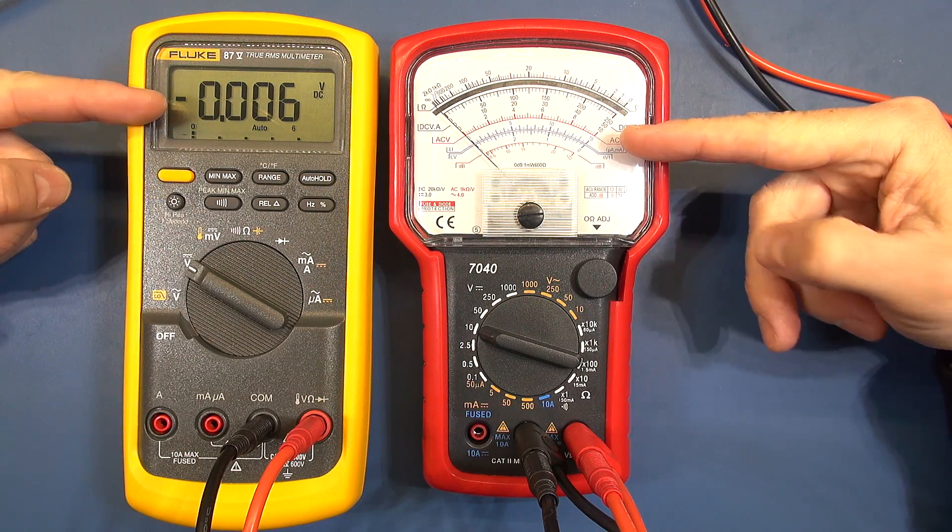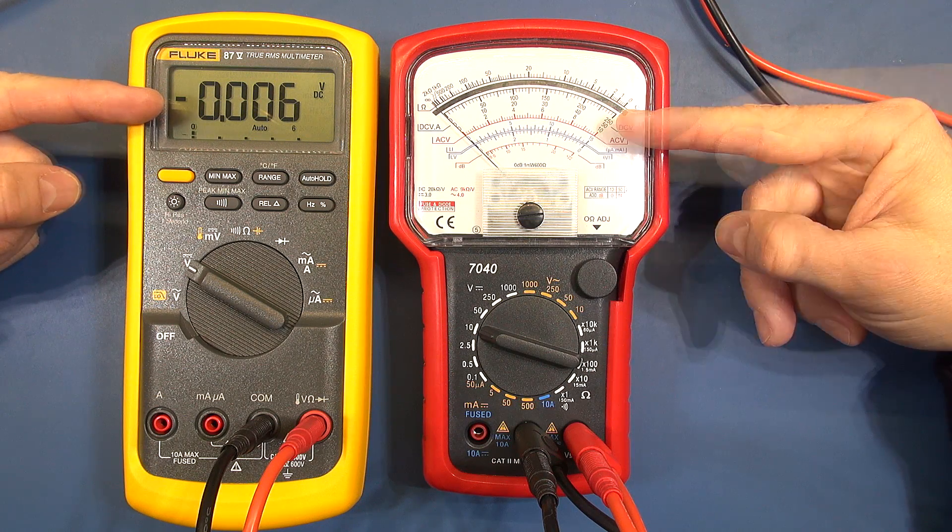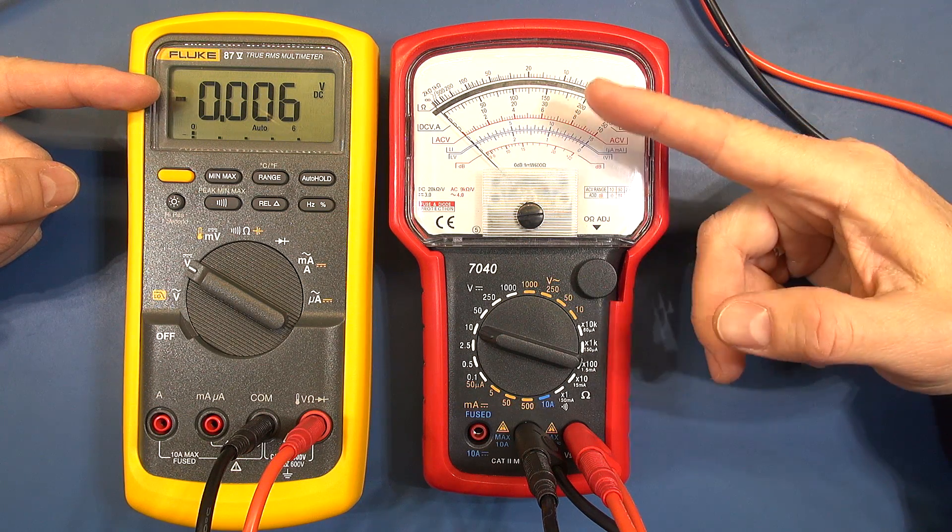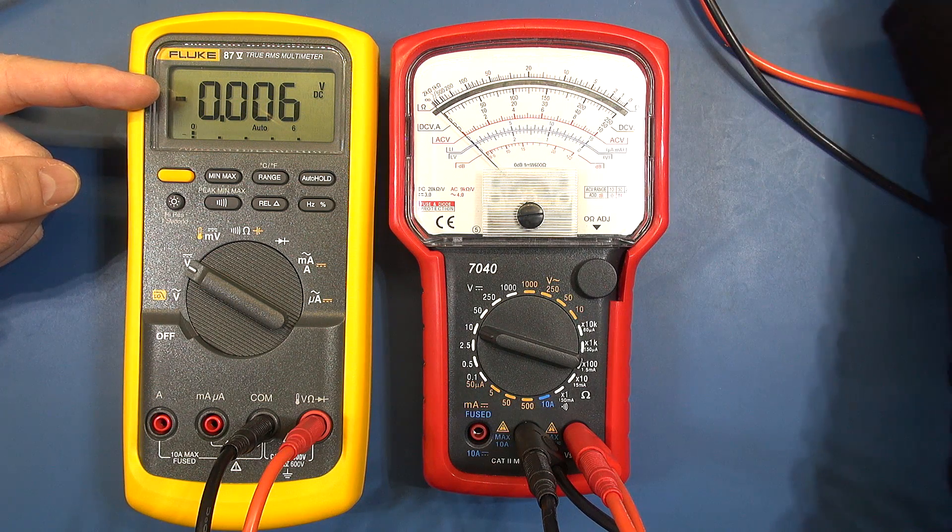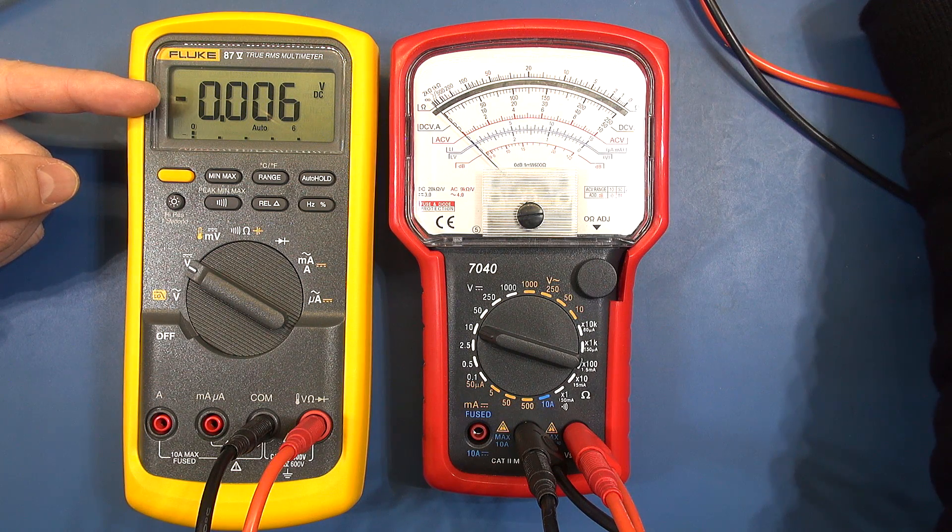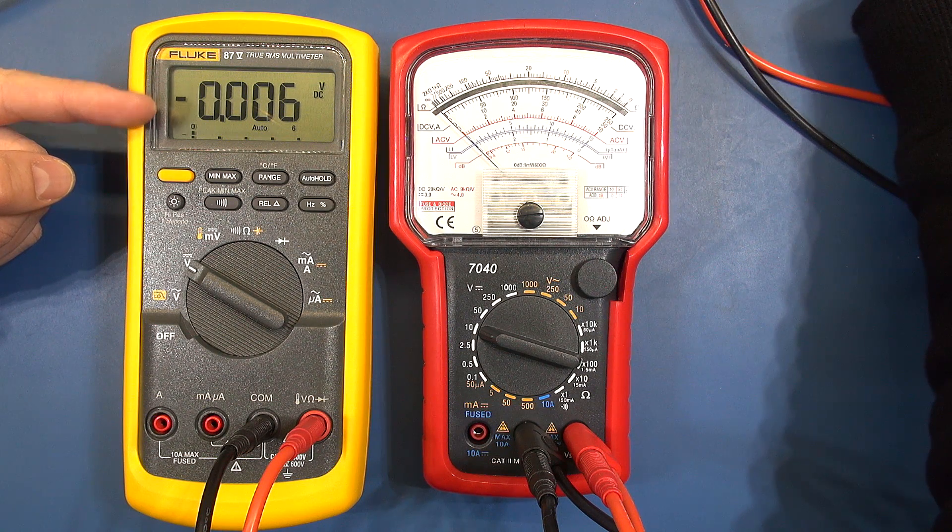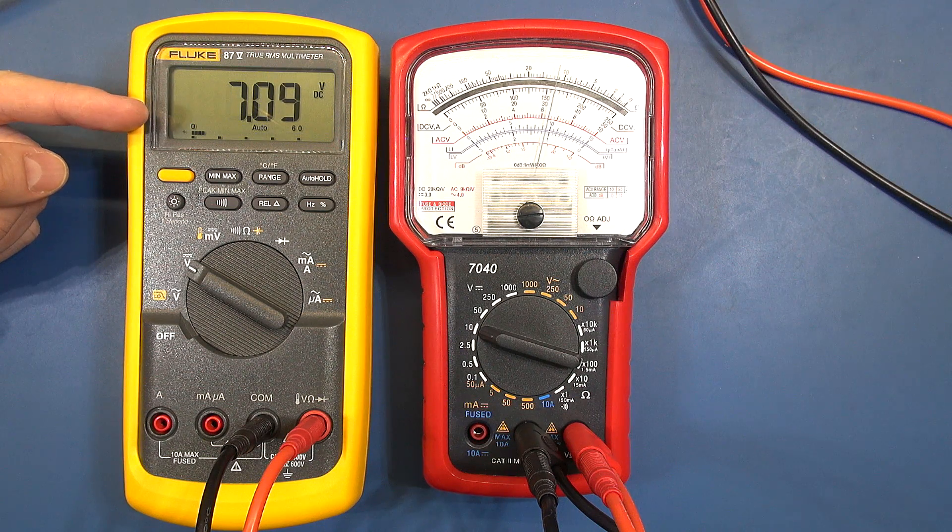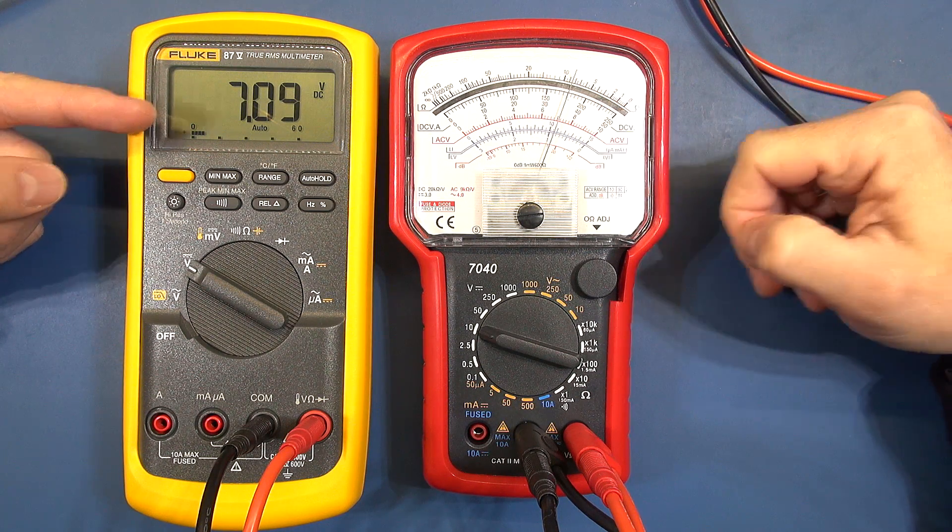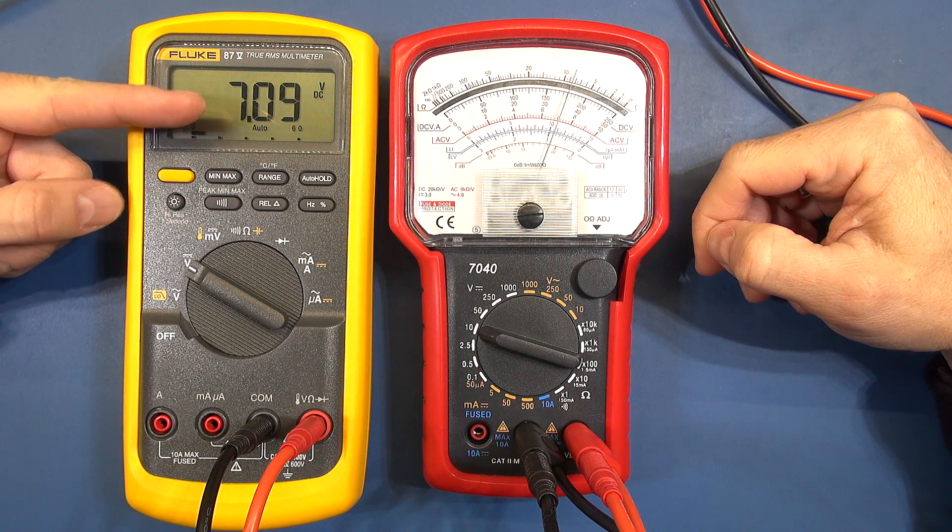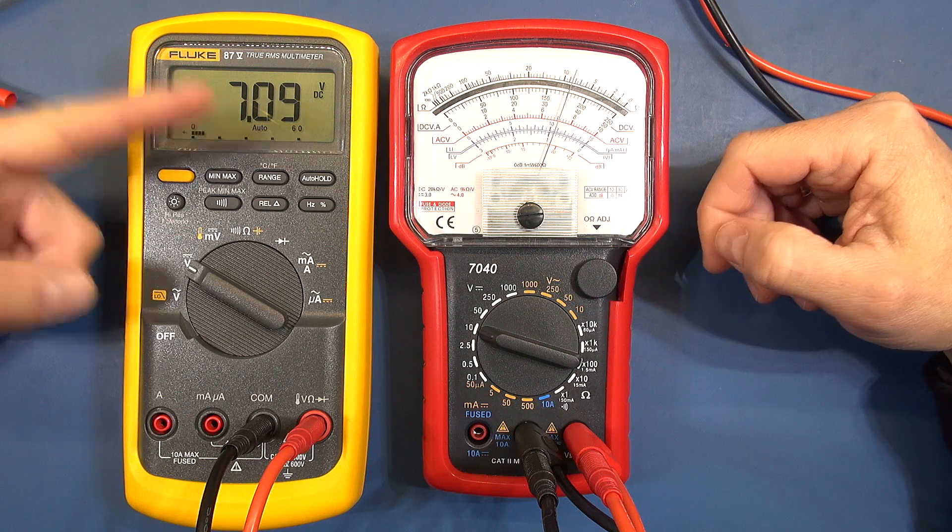The next obvious challenge between these two meters is actually taking a reading from each of their displays. We've obviously got a digital representation here and an analog via this needle on the analog meter. Now if I switch on my power supply it'll be interesting to see how quickly you can guess what the actual reading is. So as I switch that on you'll see that the needle swings up to a value but quite clearly you can quickly take a fairly quick and accurate reading off the digital meter, 7.09 volts.